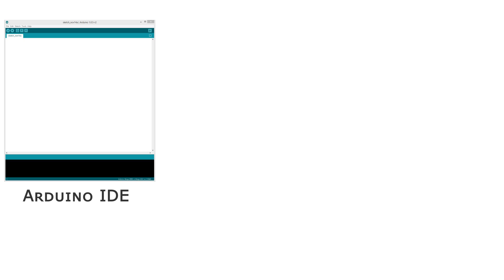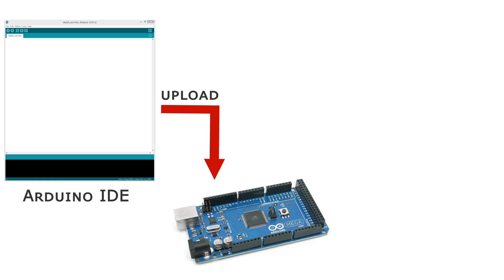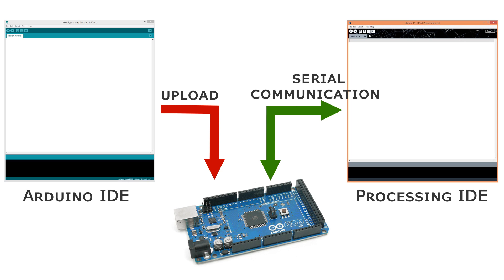For the example we are going to do, first we have to make code using the Arduino development environment and upload it to the Arduino board. That code will enable interaction between the Processing development environment and the Arduino board using serial communication. After that, using the Processing development environment, we will make an application for controlling the Arduino board.